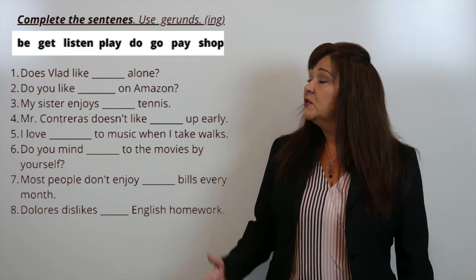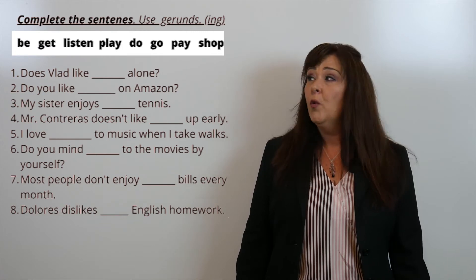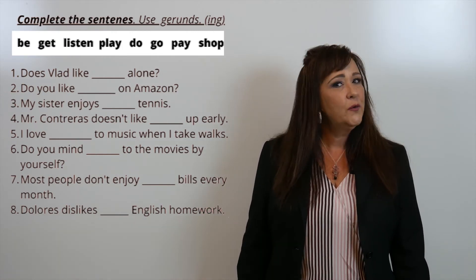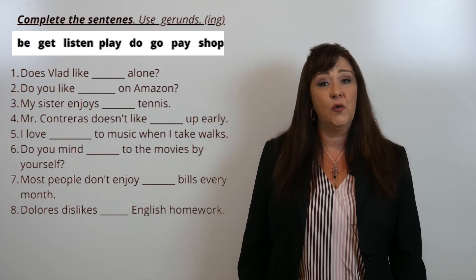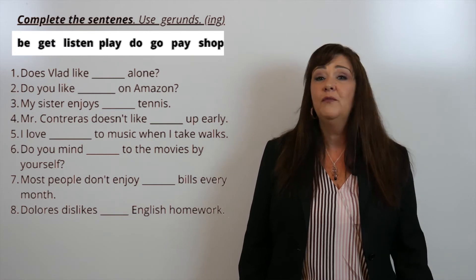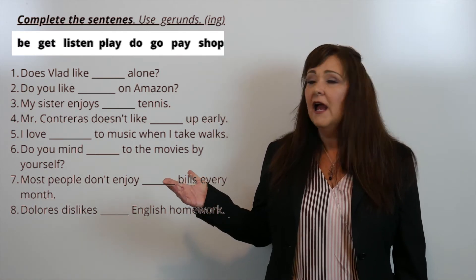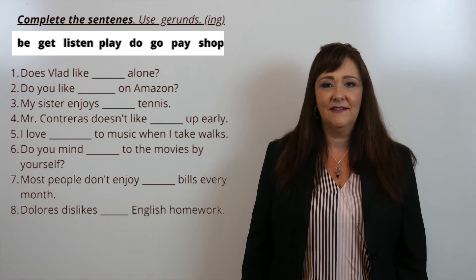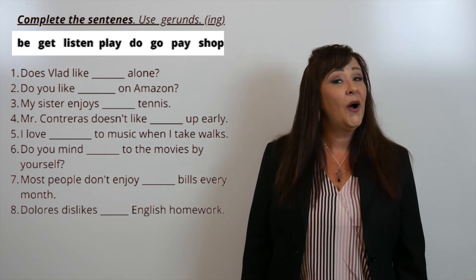Now that you've had a little explanation of the grammar chart, which I hope you wrote down, let's try to practice using that information in sentences. On your screen you see eight sentences, and also eight words in the box above. Those words are not in the form of a gerund, so when you put them in the sentence, you need to change the word to a gerund — for example, be would be being, swim would be swimming. Go ahead and pause the video to do the activity, and when you finish, turn the video back on and I'll give you the correct answers.